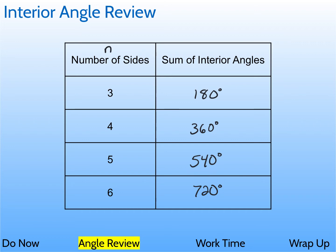Remember, if n is the number of sides, the sum of the interior angles: you do n minus 2 — that's how many triangles you can form — and then times 180 degrees. So basically, the formulaic version would be like 5 minus 2 is 3, and then 3 times 180 is 540.